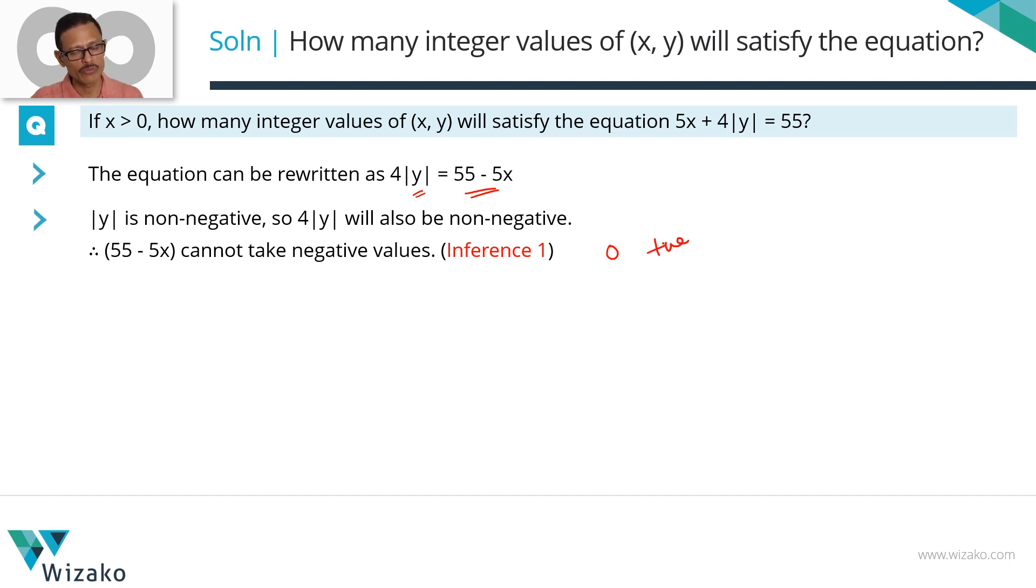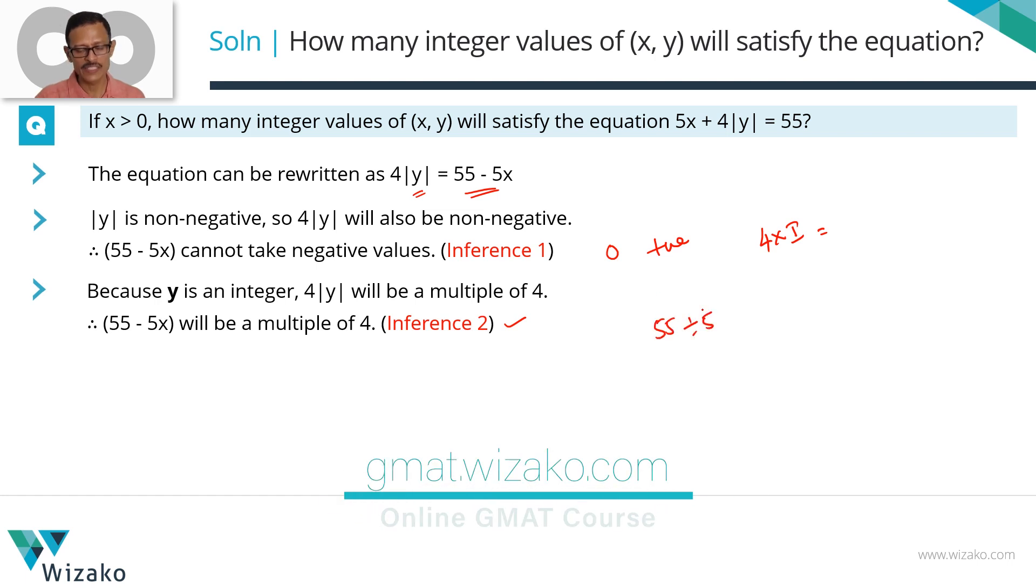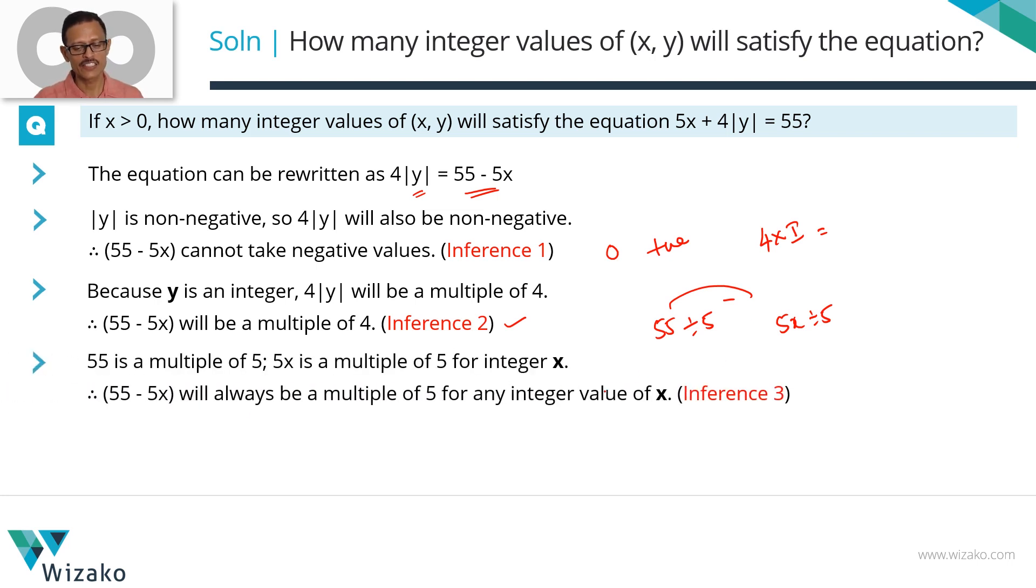Second inference: for integer values of y, |y| will be an integer. 4 times modulus of an integer, 4|y| is 4 times |y|, 4 times an integer is going to be a multiple of 4. Then 55 - 5x is a multiple of 4. Third inference: 55 is a multiple of 5, 5x is also a multiple of 5, which means 55 - 5x is going to be a multiple of 5. Here we are trying to find integer values for x and y which means x is an integer is satisfied here.